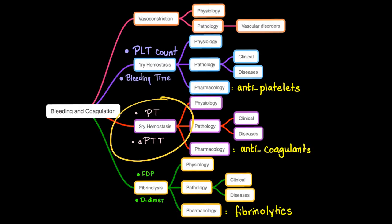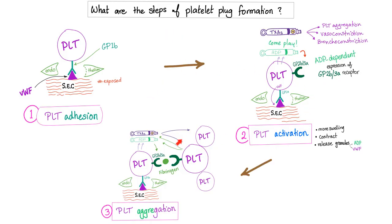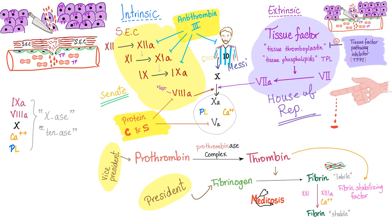In hemophilia, the problem is with secondary hemostasis. PT will be normal because the extrinsic pathway is normal, but PTT will be prolonged because the intrinsic pathway has a problem. This is different from von Willebrand disease, which affects primary hemostasis. The problem with hemophilia is in the intrinsic pathway: hemophilia A has problem with factor 8, hemophilia B with factor 9, and hemophilia C with factor 11.